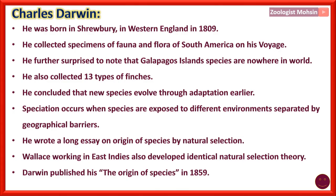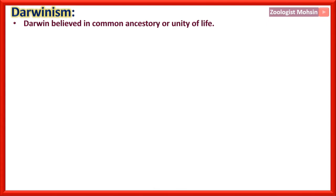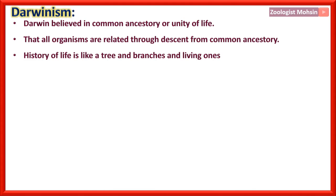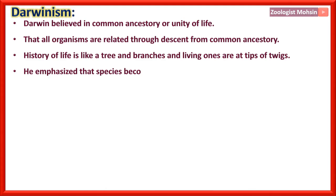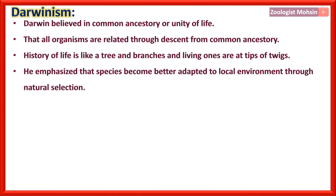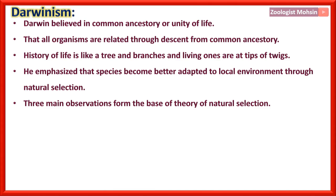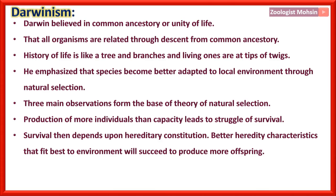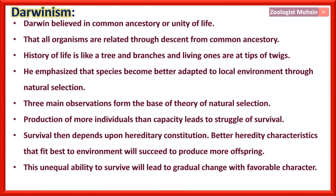Darwinism: Darwin believed in common ancestry or unity of life — that all organisms are related through descent from a common ancestor, called descent with modification. The history of life is like a tree, with living species at the tips of twigs. He emphasized that species become better adapted to local environments through natural selection. Three main observations form the base: overproduction of individuals leads to struggle for survival; survival depends on hereditary constitution; better hereditary characteristics that fit the environment will produce more offspring, leading to gradual change with favorable characters.